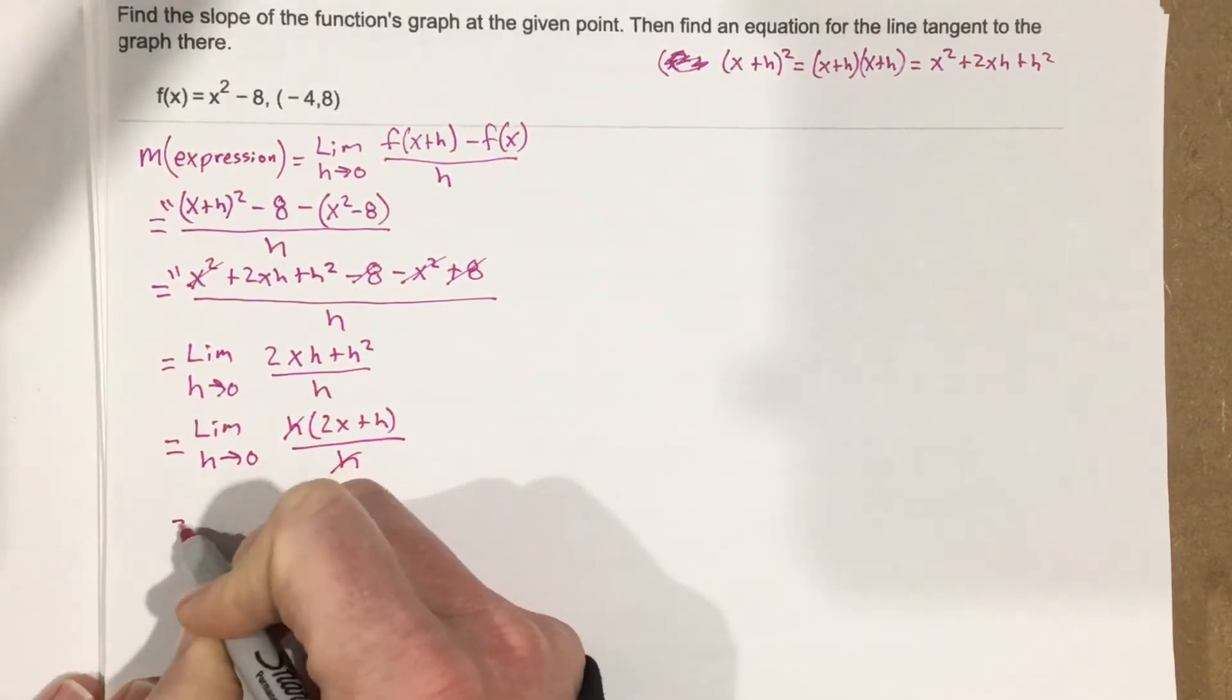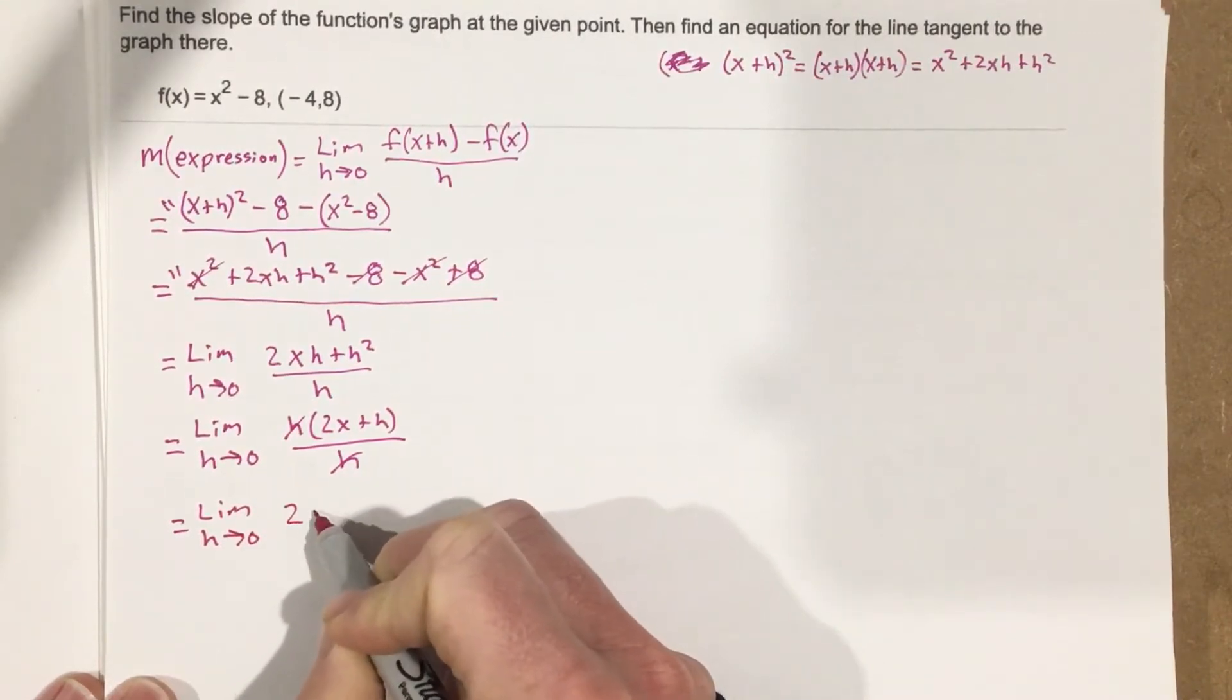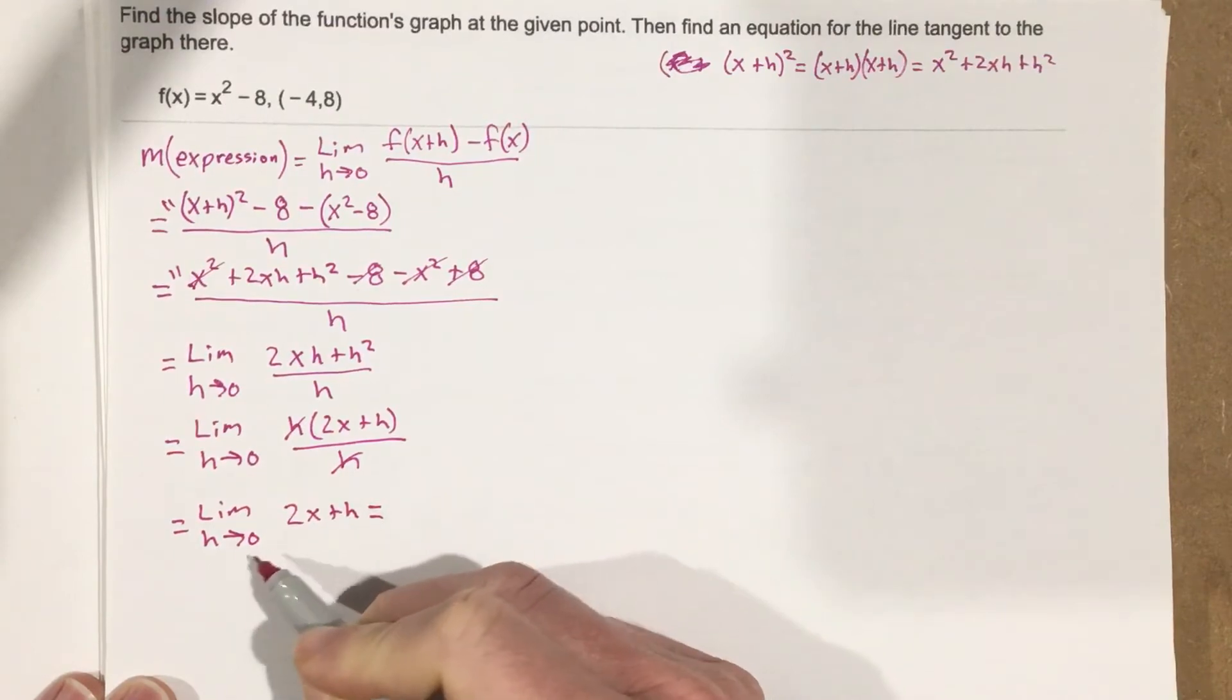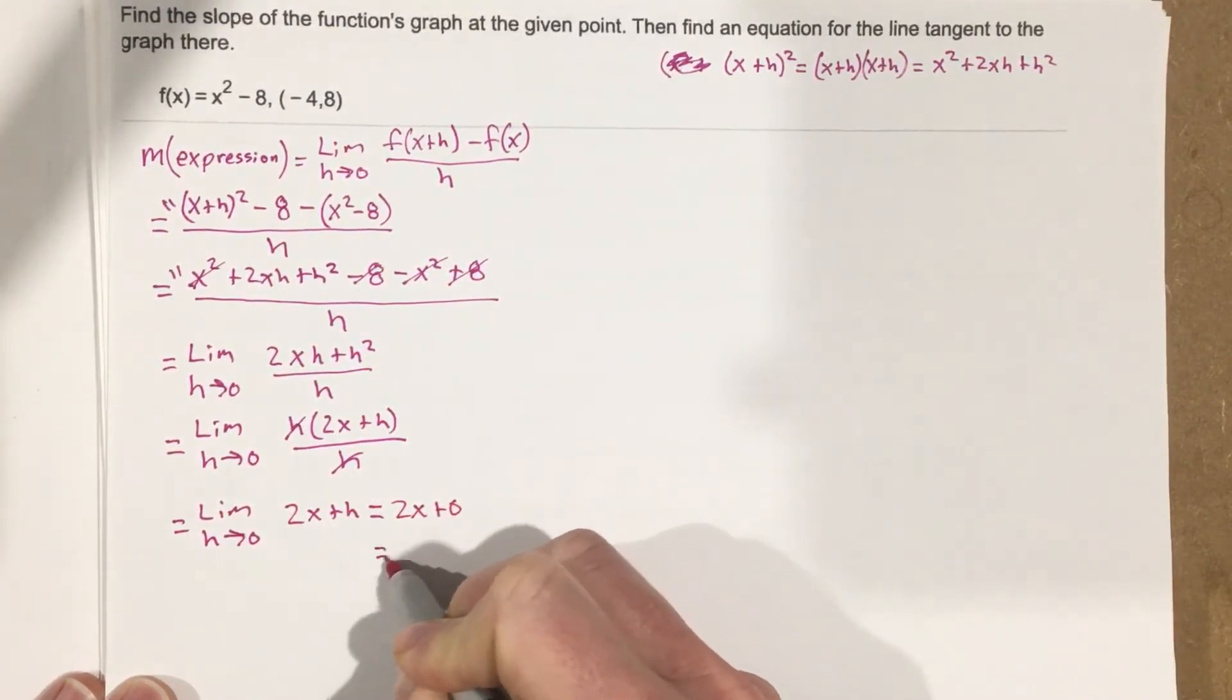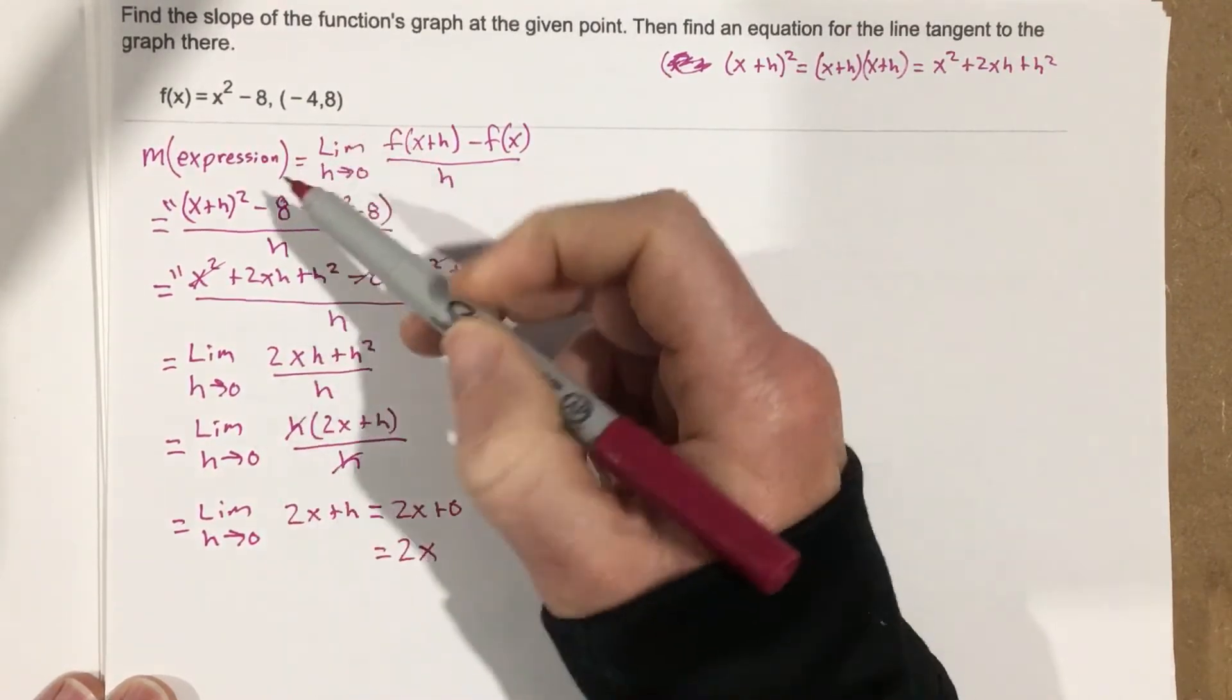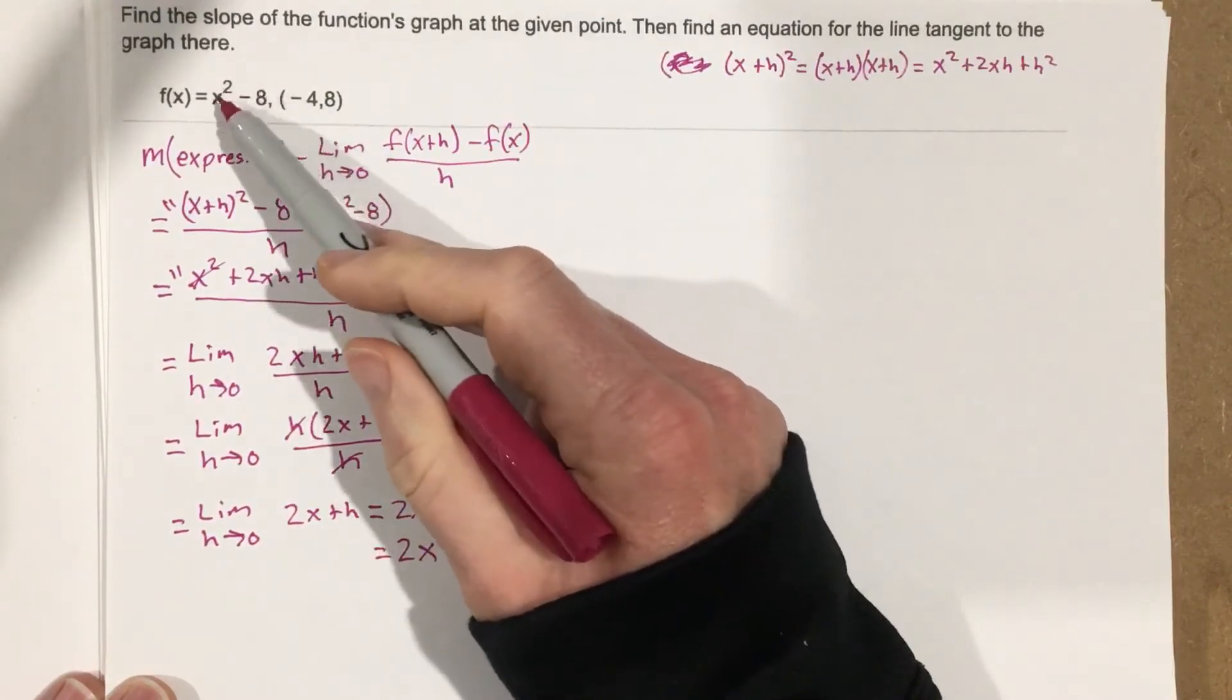And so now we have the limit as h approaches 0 for 2x + h, which is going to equal, when I plug in 0, that will be 2x + 0 which equals 2x. So this is the expression for the slope for this function x² - 8, for any slope on this curve.